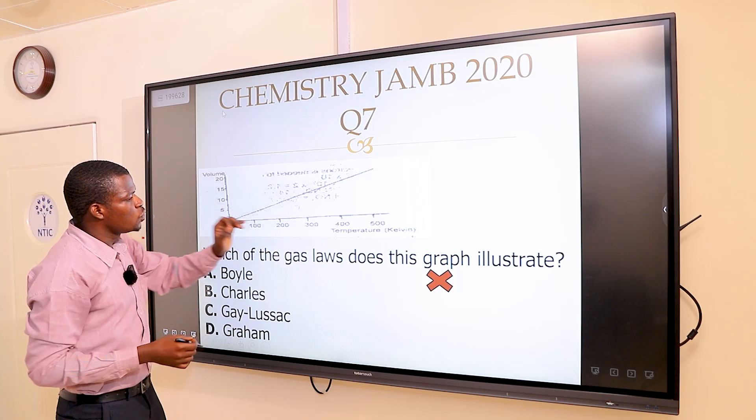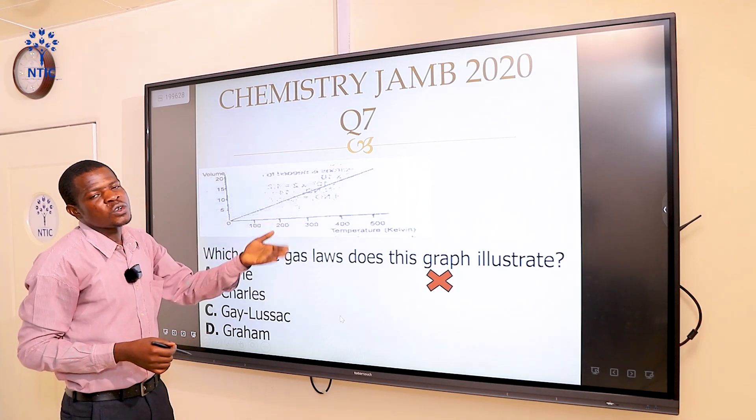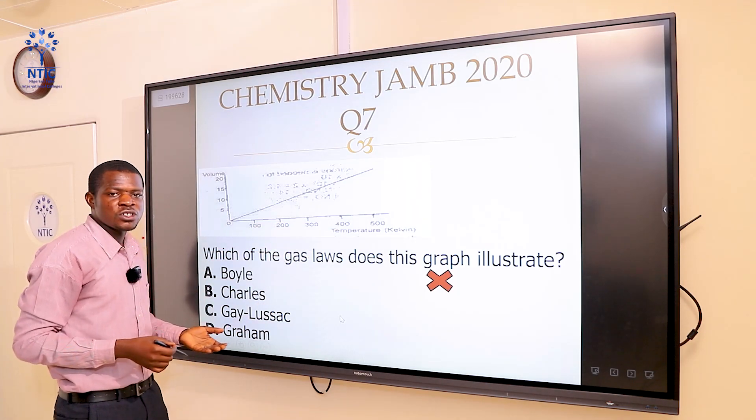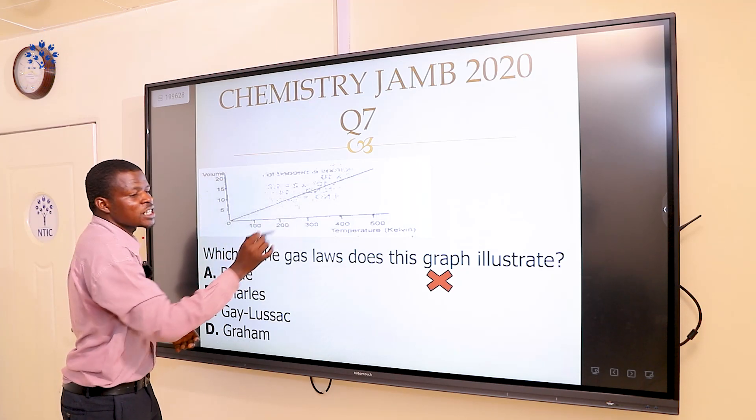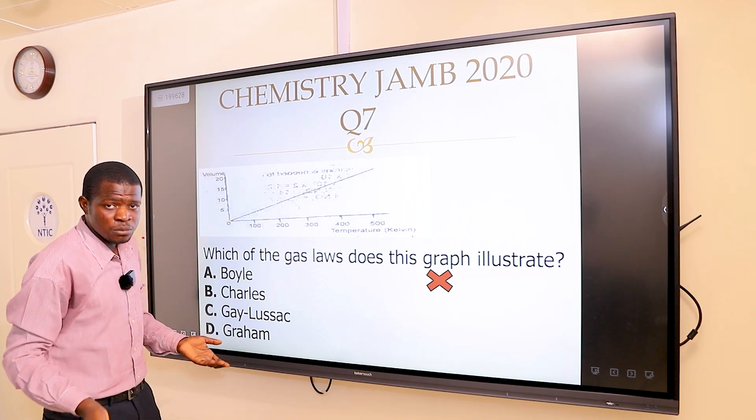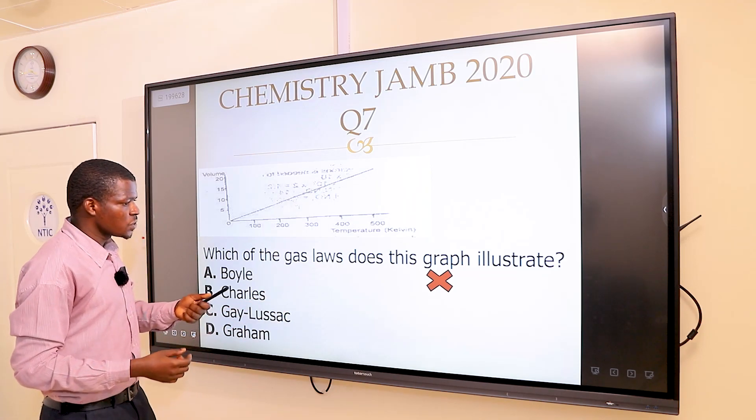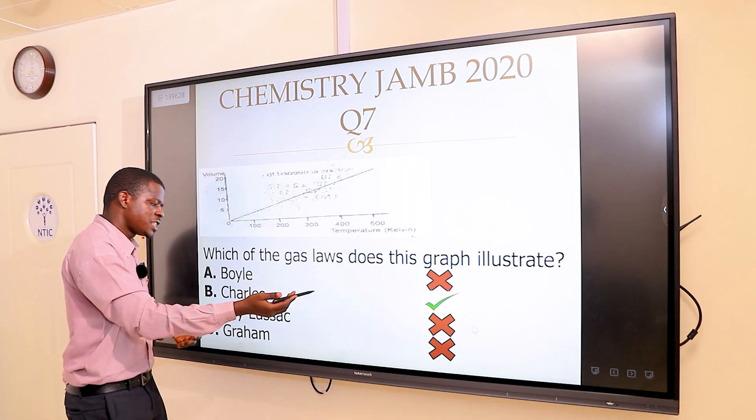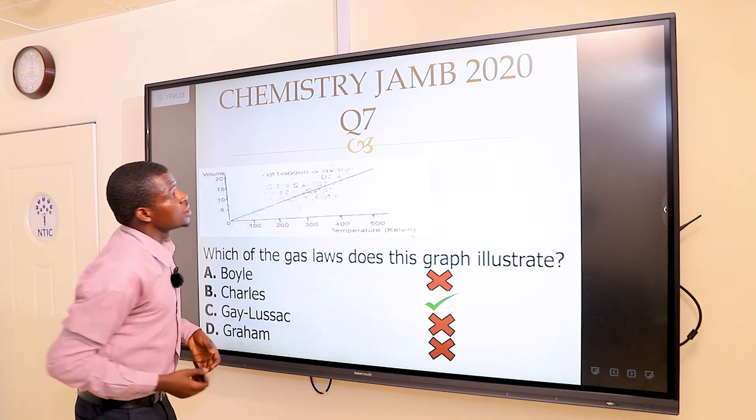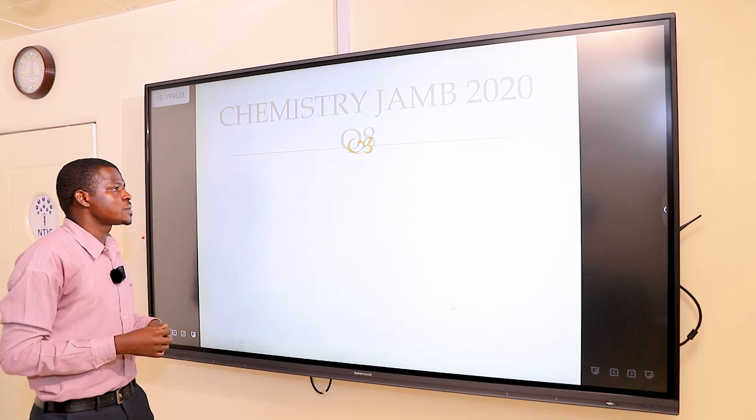Let's get back to our options. From the graph, I have volume and temperature. Obviously, this question is talking about Charles' law. As the volume was increasing, the temperature was actually increasing. The right answer must be not A, not C, obviously not D, but definitely B.